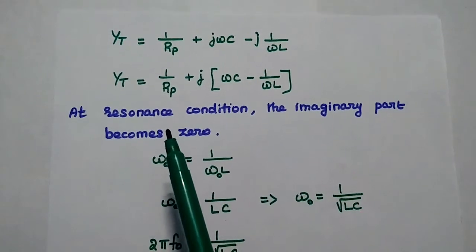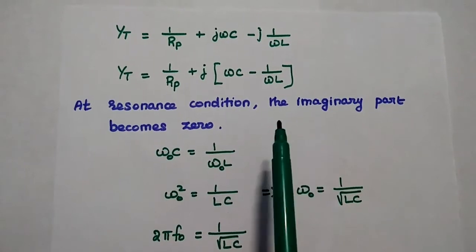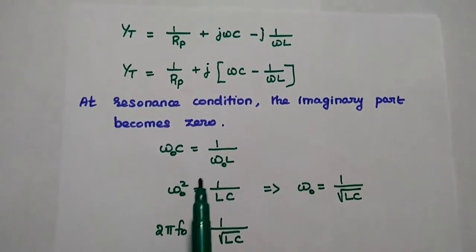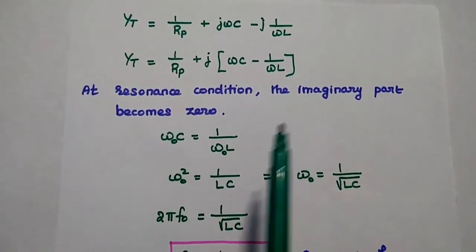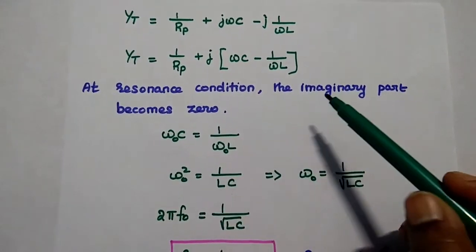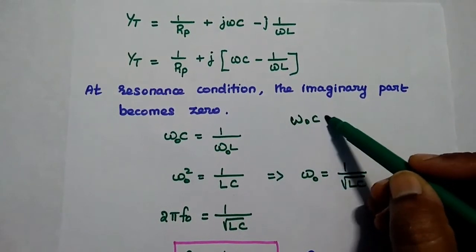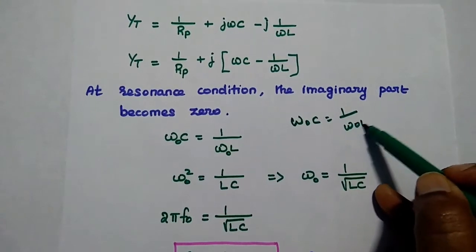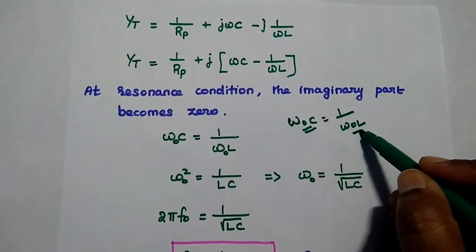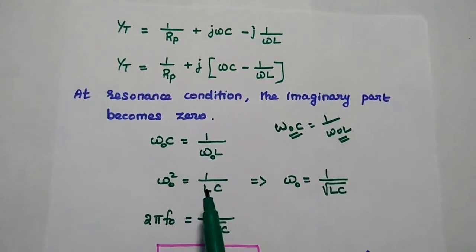At resonant condition, both reactances are equal, so they cancel each other — meaning there is no imaginary term. At resonant condition, we equate the imaginary term to zero. This gives: omega-naught·C equals 1 by omega-naught·L. We use omega-naught to denote the resonant condition. Then we interchange C and omega-naught to get: omega-naught squared equals 1 by L·C.